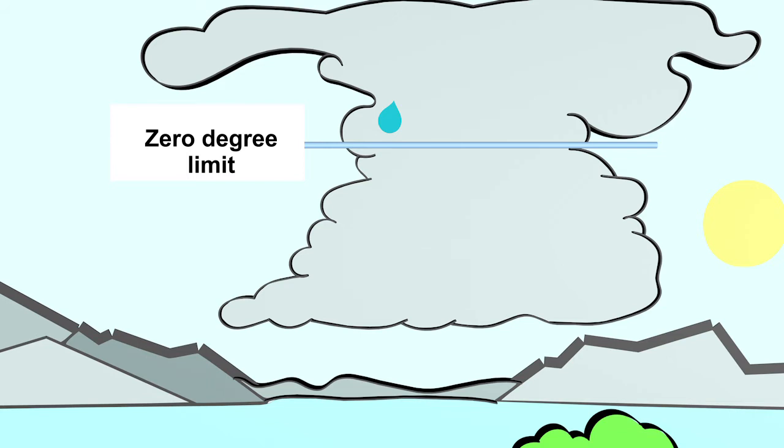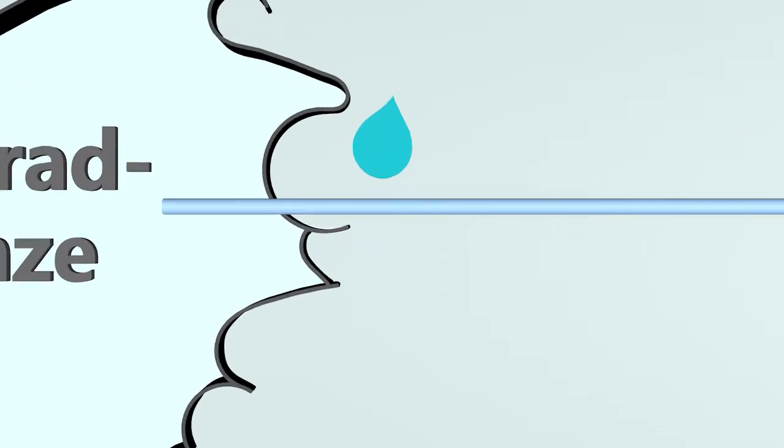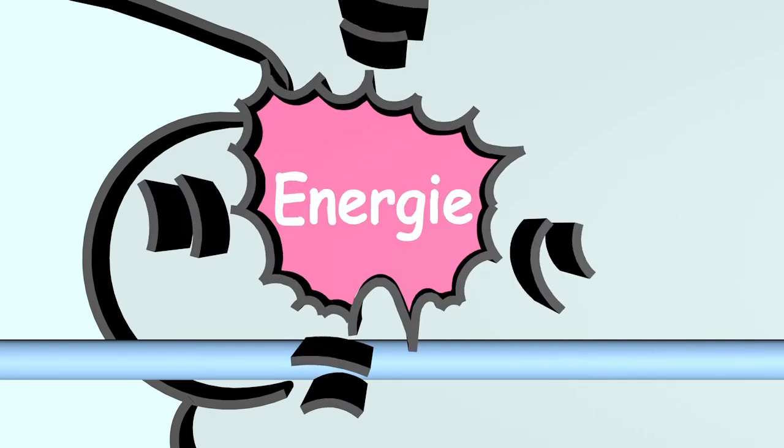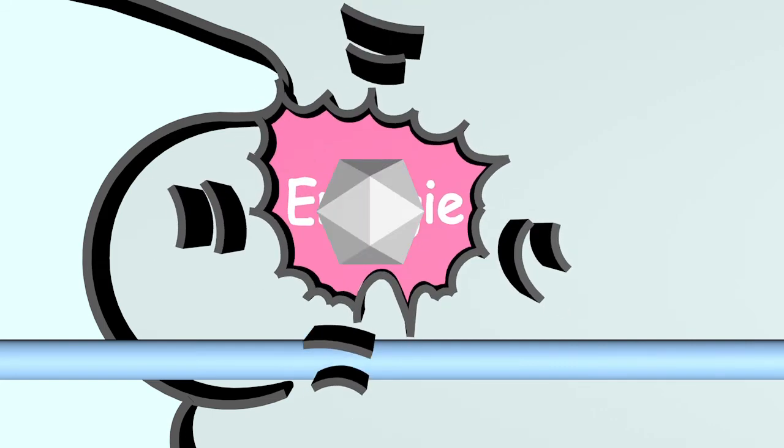The water drops continue to rise, even to above the zero degree limit. Above the zero degree limit, the air has a temperature below zero degrees Celsius. The water drops turn into small ice crystals. When water turns into ice, energy is released again. This warms the air around the ice crystals, and the updraft causes the ice crystals to rise further.